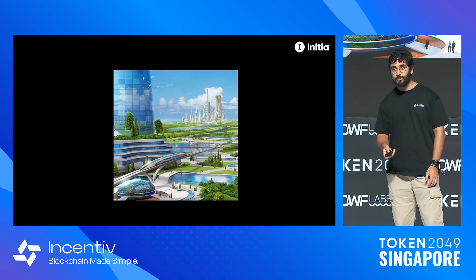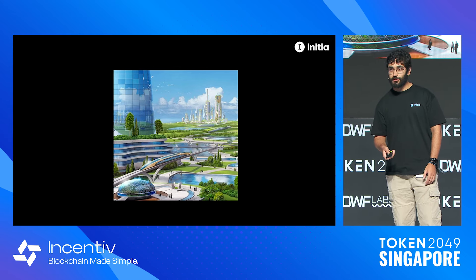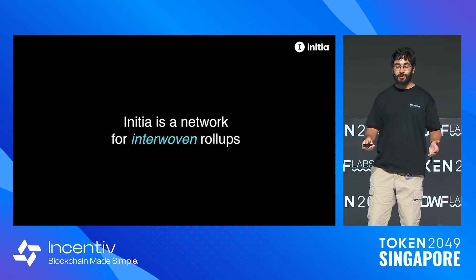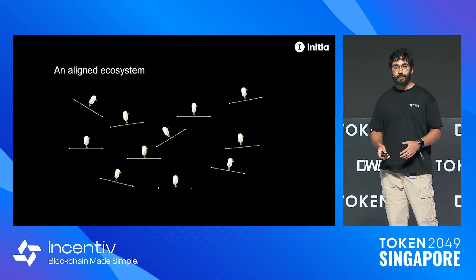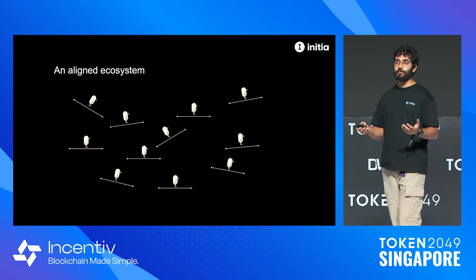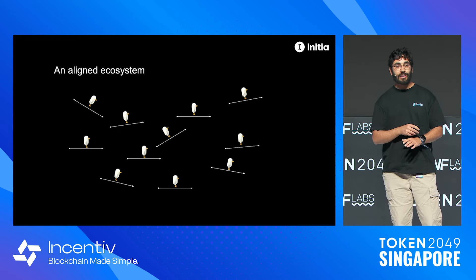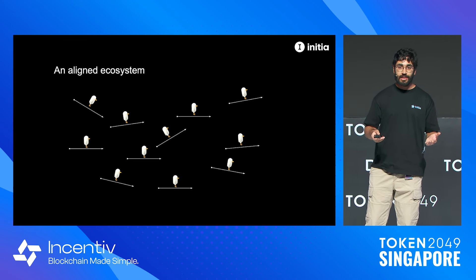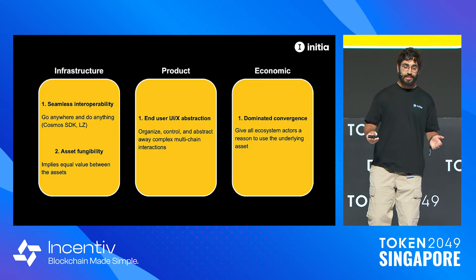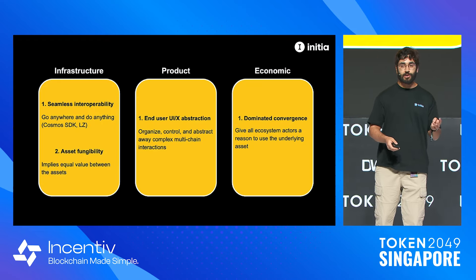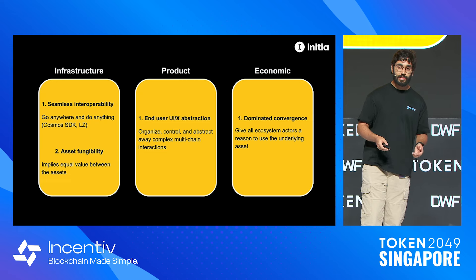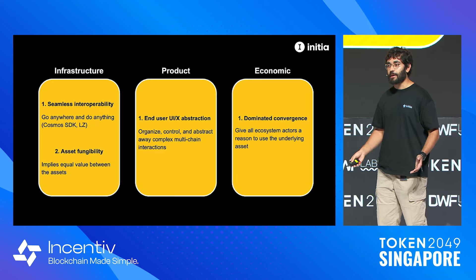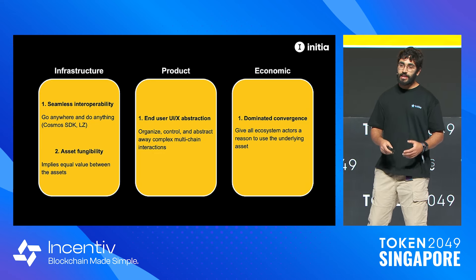This is going to be the world once Initia goes live on mainnet — beautiful and lovely. So what is Initia? It is essentially a network for interwoven rollups. One of the ways we create this new Garden of Eden of multichain is by ensuring alignment amongst all users. In an aligned ecosystem, everyone's moving in somewhat the same direction. You can create alignment across three main verticals: the infrastructure stack, the product stack, and the economic systems that bind everything together.